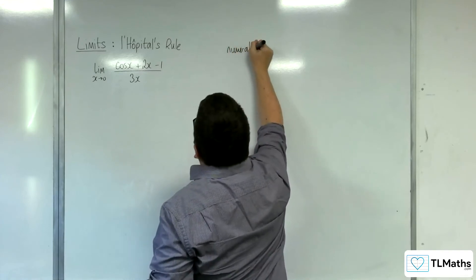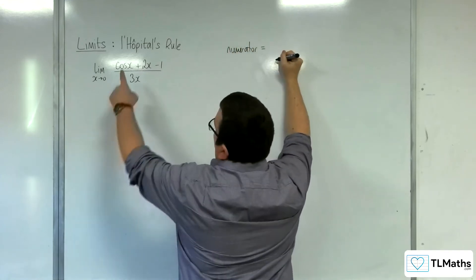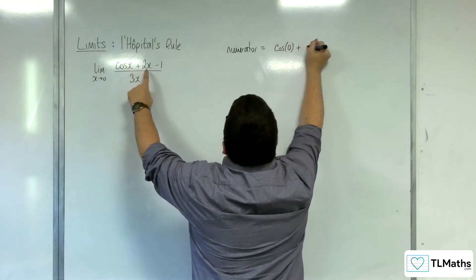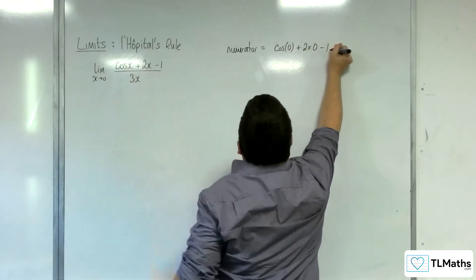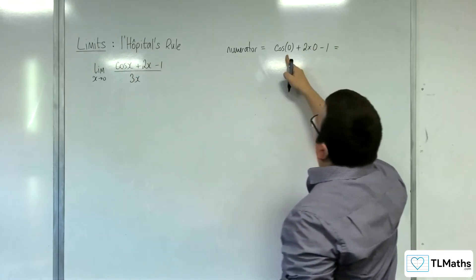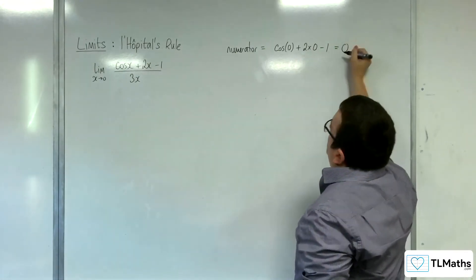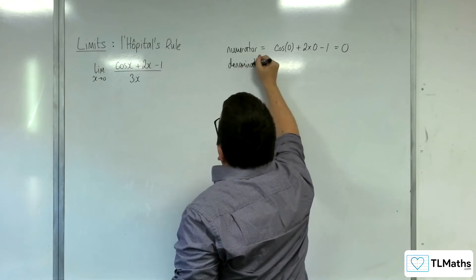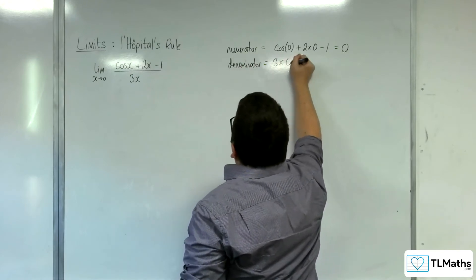our numerator is going to be equal to cosine of 0 plus 2 lots of 0 take away 1. Well, cosine of 0 is 1, so 1 take away 1 is 0, and your denominator, of course, is just 3 lots of 0, which is 0.